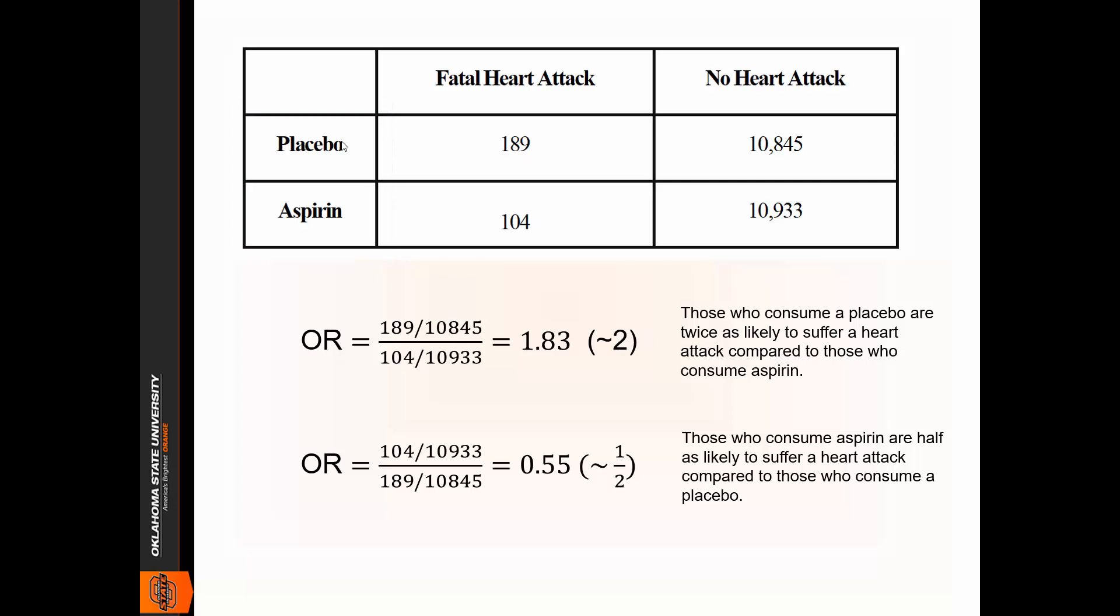The first odds ratio here, you can see that I have 189 over 10,845. So that is the placebo. Then I have that divided by the aspirin numbers, so 104 divided by 10,933. When you work that out, you find an odds ratio of 1.83.